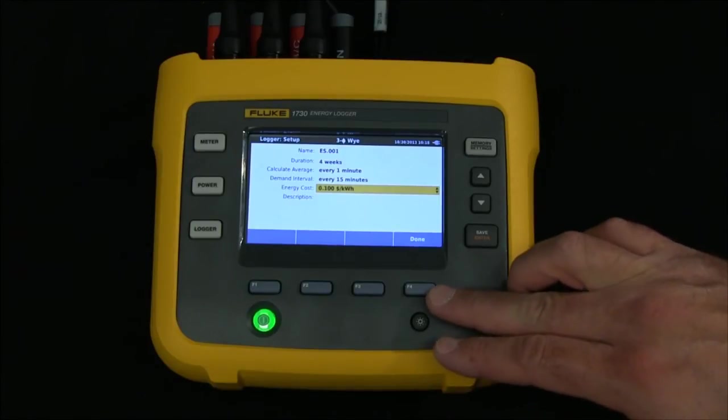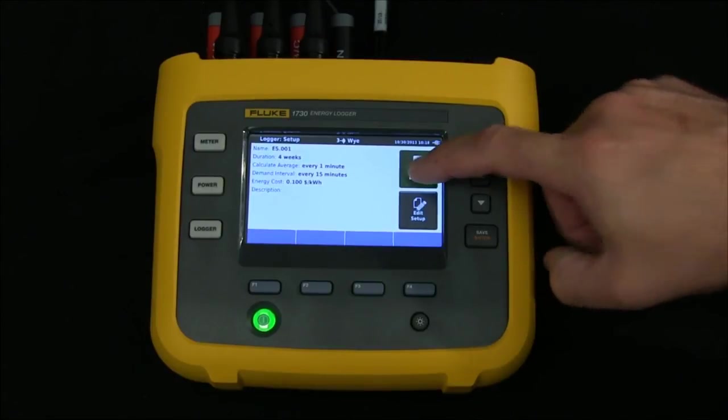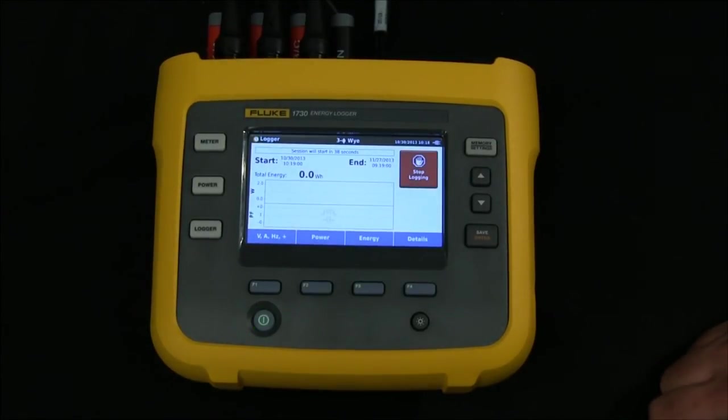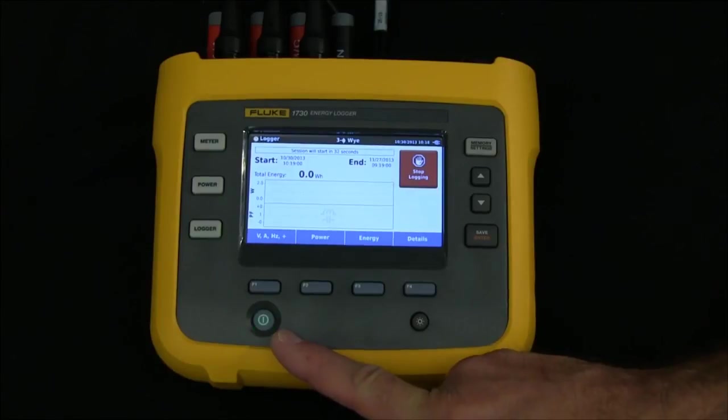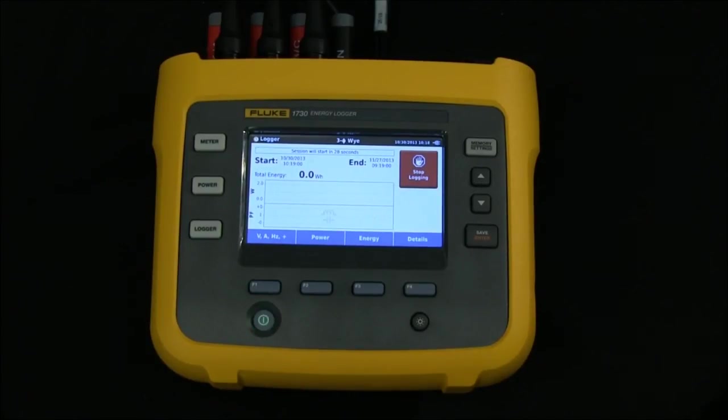Once I'm happy with my settings, I hit done, and then I hit start logging. And now the unit will run for four weeks based on the options I set. And you'll notice that the power light is now flashing green, letting me know that the unit is actually recording.